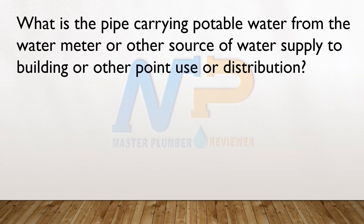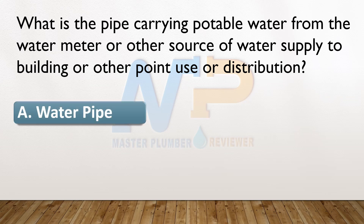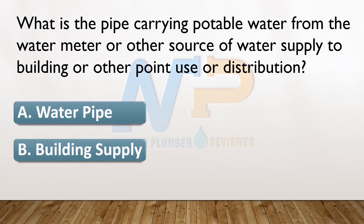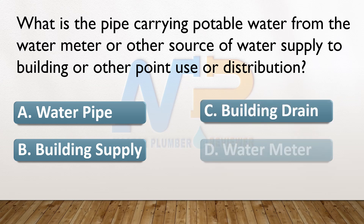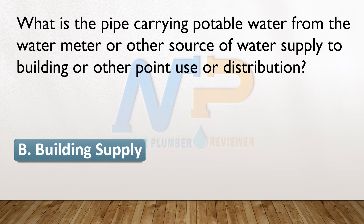What is the pipe carrying potable water from the water meter or other source of water supply to building or other point of use or distribution? A. Water pipe. B. Building supply. C. Building drain. D. Water meter. The answer: B. Building supply.